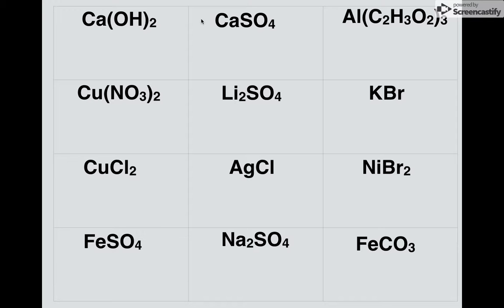So spoiler alert, you're going to have to still be able to go from formulas to names. So, for example, if it gives you any of these formulas, you should be able to find the positive ion, the negative ion, and then use your chart to tell whether it's soluble or insoluble. So if you want to pause now, take a look and see if you can figure these out, but I'm going to go through them pretty quickly.